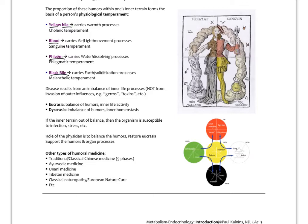When the terrain is in balance, the individual is less susceptible to outer infections or the effects of stress. The role of the physician was to balance the humors, restore eucrasia, and support the organ processes. This type of medicine is known as humoral medicine, and it underlies many traditional medicines today — traditional Chinese medicine, Ayurveda, Unani, Tibetan medicine, and many others, as well as classical naturopathy in the European nature cure movements. Very different from our mechanistic materialist medicine today, this approach maintains that if you keep the terrain healthy, a person is less susceptible to outer influences.